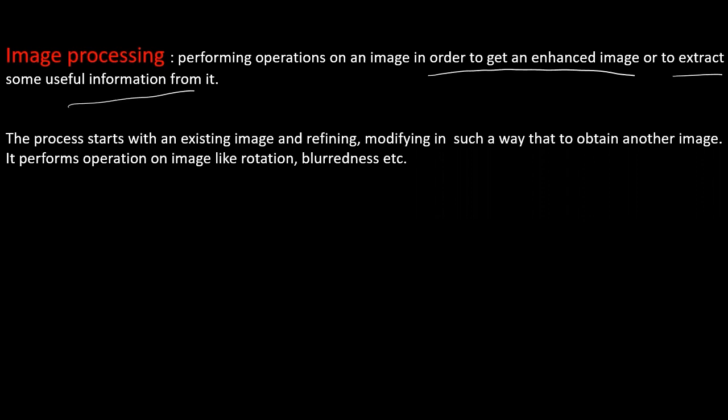In the same way, suppose you take the traffic signals — whenever your eyes capture the green light and your brain processes it, you will start moving when the green light appears. So that is image processing in the context of human beings: capturing is through the eyes and processing is through the brain. In the same way, in technical terms, the image is captured through a camera.